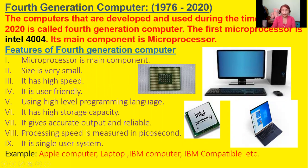Now you see here this picture — this computer's picture. These two pictures I have shown you are 4th generation computers. You see here a small device; this is the main component of 4th generation computer and it is called a microprocessor. So the main component of the 4th generation computer is microprocessor.